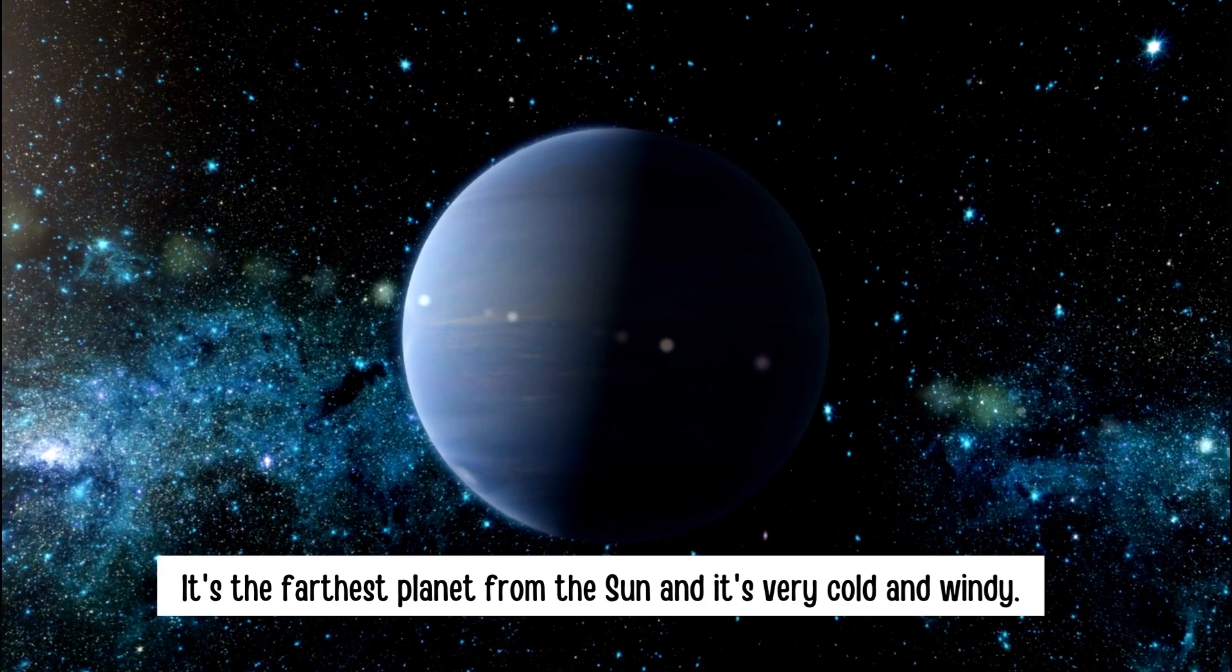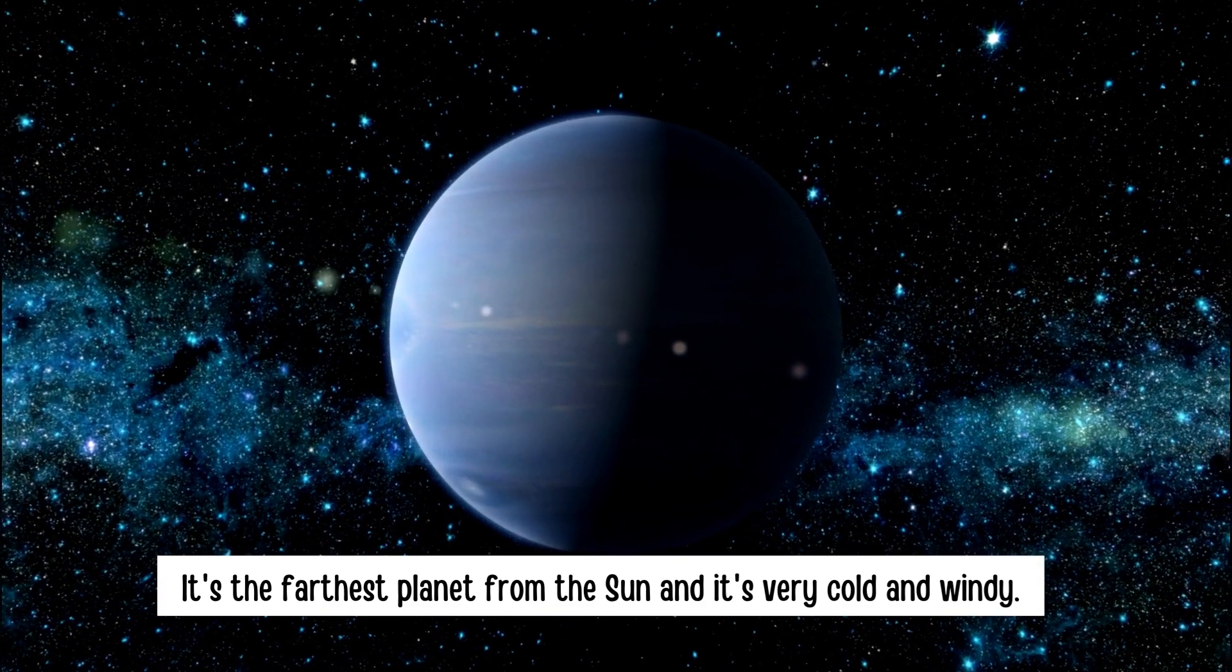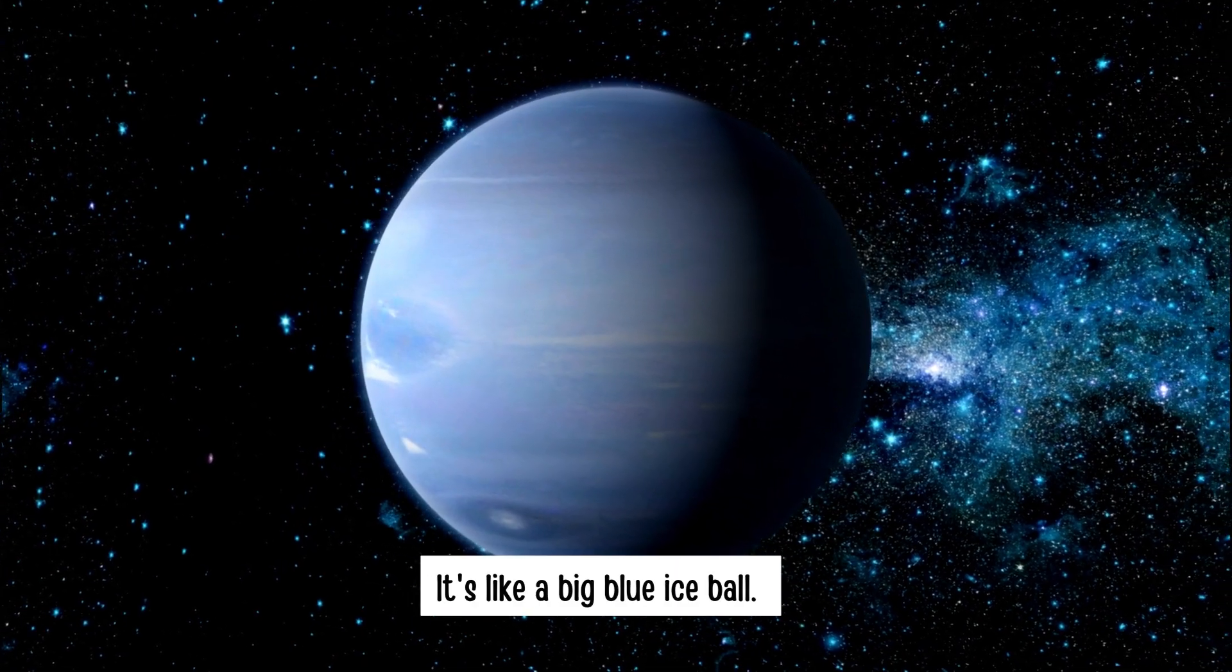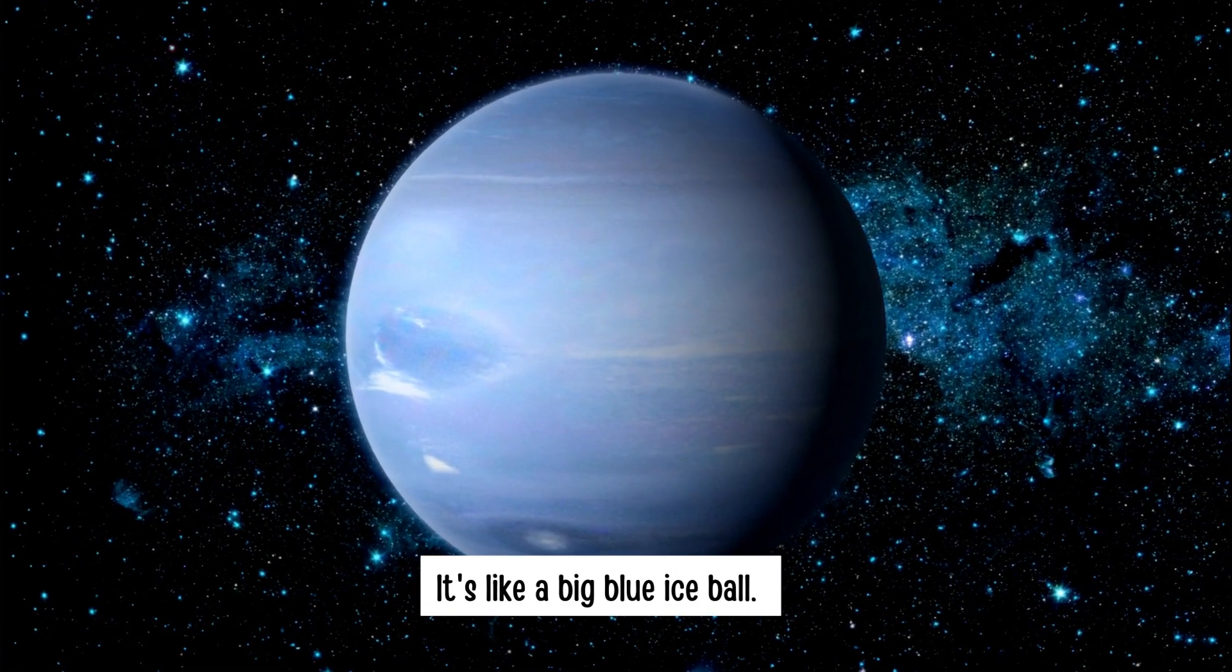Neptune. It's the farthest planet from the sun and it's very cold and windy. It's like a big blue ice ball.